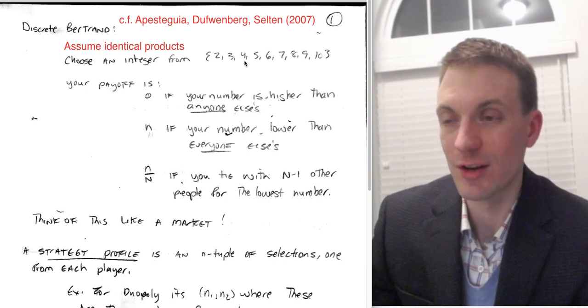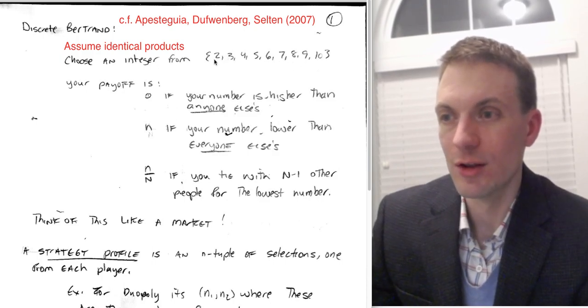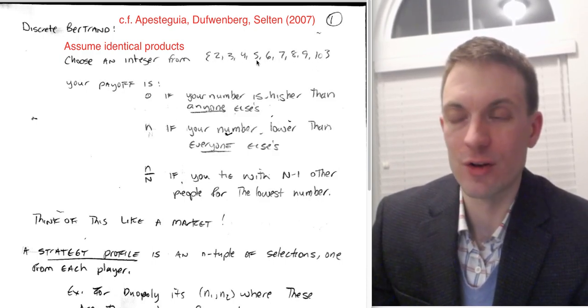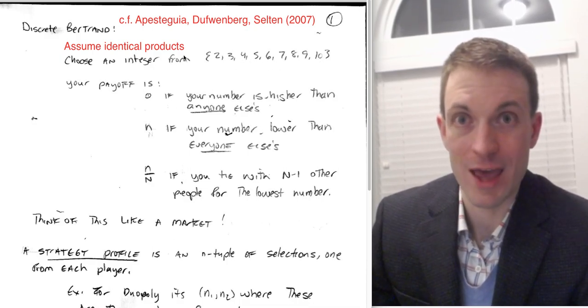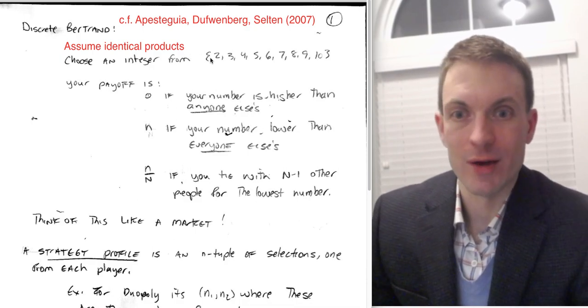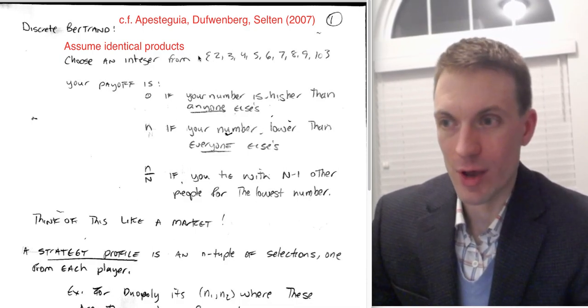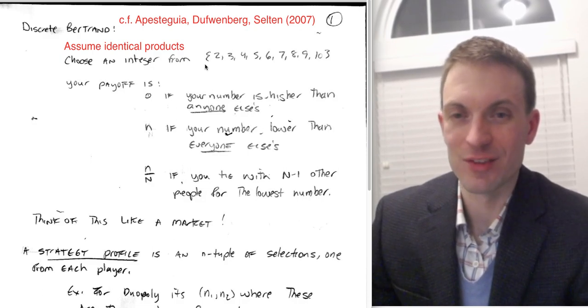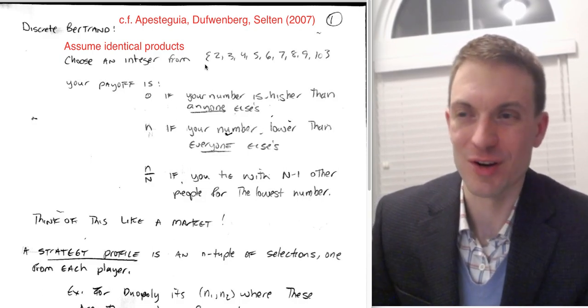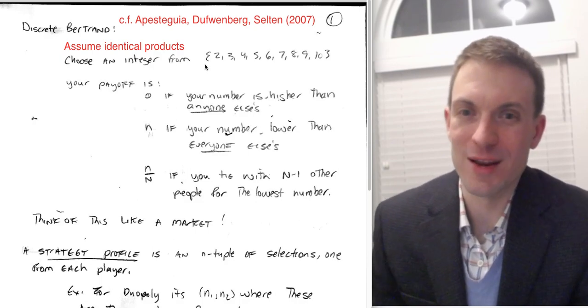This is the game where we're selecting numbers from the set 2 up through 10, integers 2 up through 10. Now, suppose I widened the set to allow 0 and 1. In doing so, I would add 2 Nash equilibria. If we widened the set to allow you to select 0 and to select 1, those would also be Nash equilibria. Why would 1-1 be a Nash equilibria? Can you deviate by doing anything else?